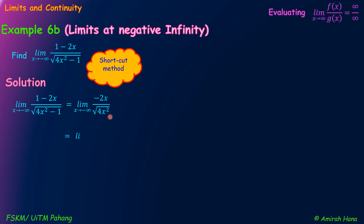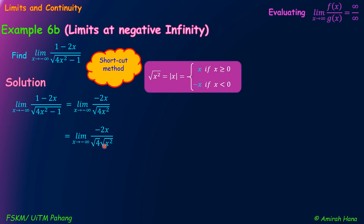After that, it equals the limit as x approaches negative infinity of negative 2x, and we can separate the radical using the properties of radicals: square root of 4x squared equals square root of 4 times square root of x squared. To solve square root of x squared, it actually equals modulus x. Since the square root of 4 is a perfect square, it equals 2, so we can simplify. Then square root of x squared equals modulus x.